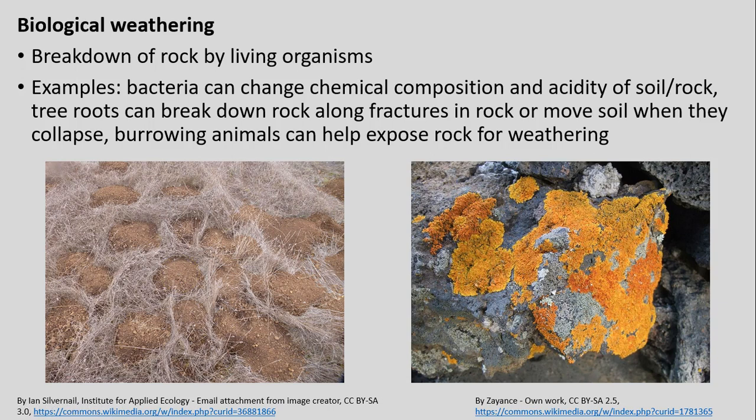Our third type, biological weathering, involves different living things leading to weathering and breakdown of rock. On the right, lichens or moss growing on rocks can change the chemical composition and help physically break rock down as well. Animals like gophers can churn up ground and soil, and the roots of trees can fracture rocks. These are all important biological weathering mechanisms.